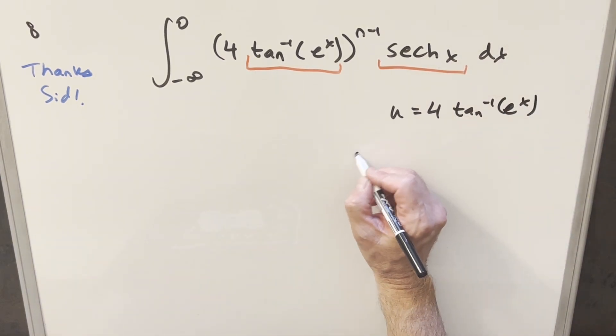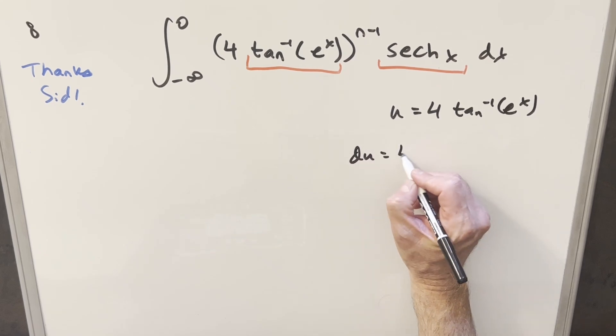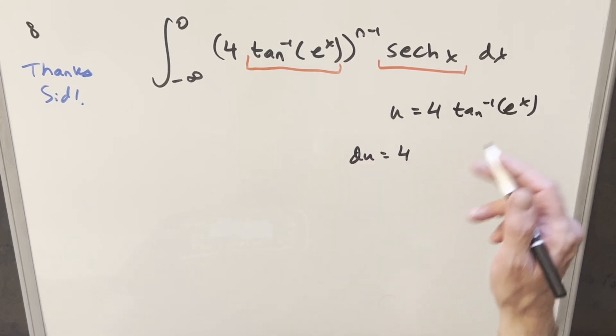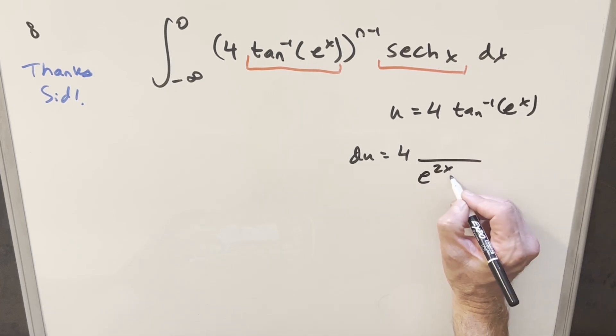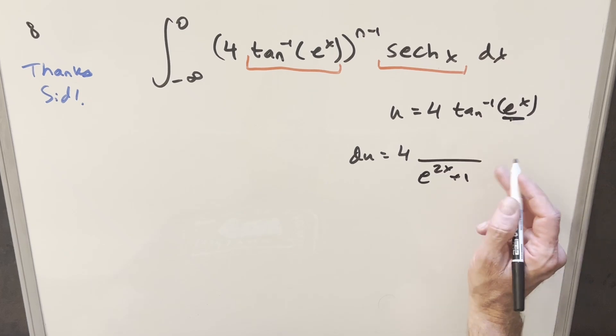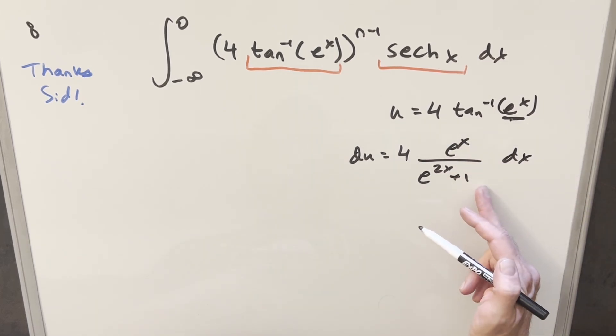Then we'll take a derivative, so for du we'll bring the four out front. For arctan we get one over x squared plus one, so we're going to have one over this thing squared which I'll write as e to the 2x plus one. Then we need the chain rule derivative of this which is just going to be e to the x dx, but I don't really like it in this form.